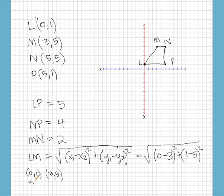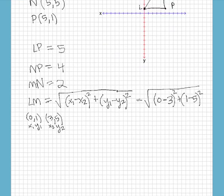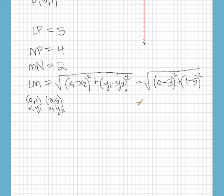This is x₁, y₁, x₂, and y₂. If we simplify our radical, we get (-3)² which is 9, plus 1 minus 5 which is -4, and if you square that you get 16. Then we get the square root of 25 when we add them, and the square root of 25 is 5.